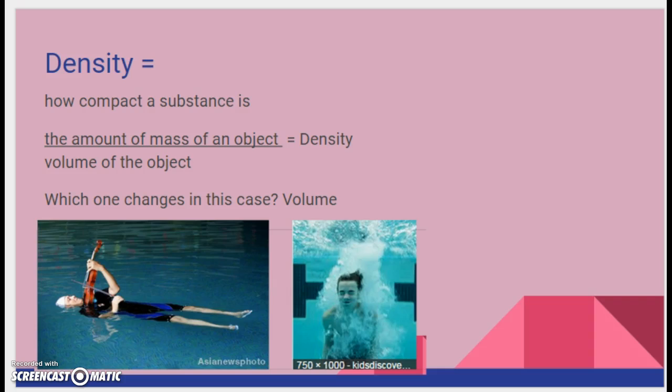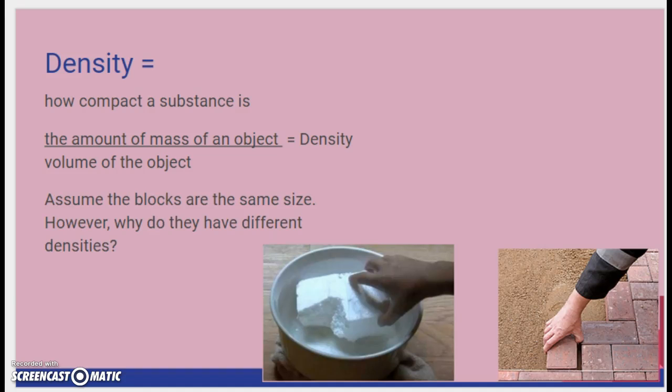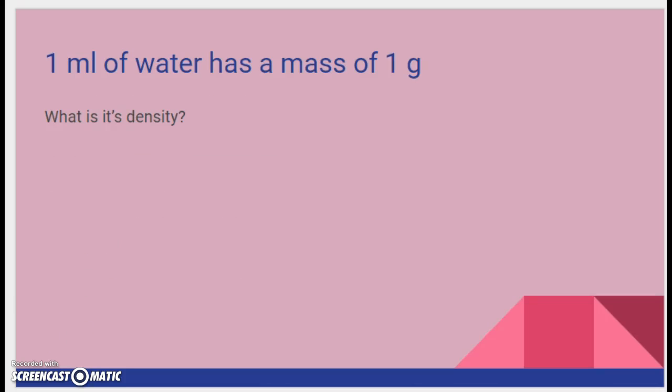Otherwise, if I had two objects and one was less dense, but they had the same volume, what would be different? So assume the blocks are the same size. However, why do they have different densities? Why does this float and this one sinks? Because they have different masses. So yeah, sometimes things will sink because they are heavier. But it's not just how heavy they are. It's how spread out the molecules are. It's how dense it is.